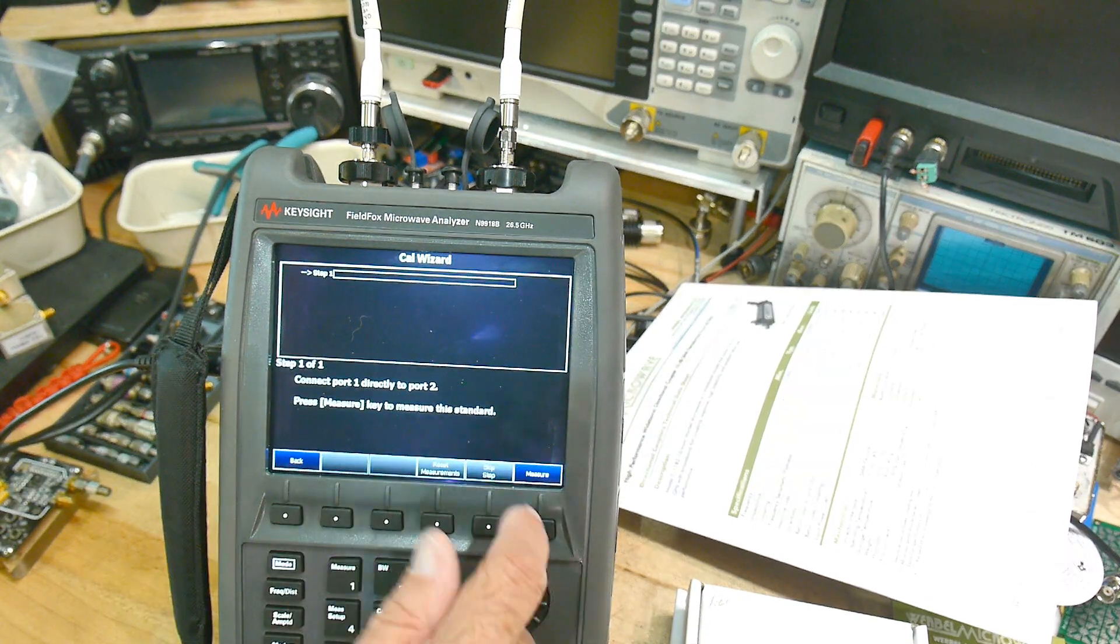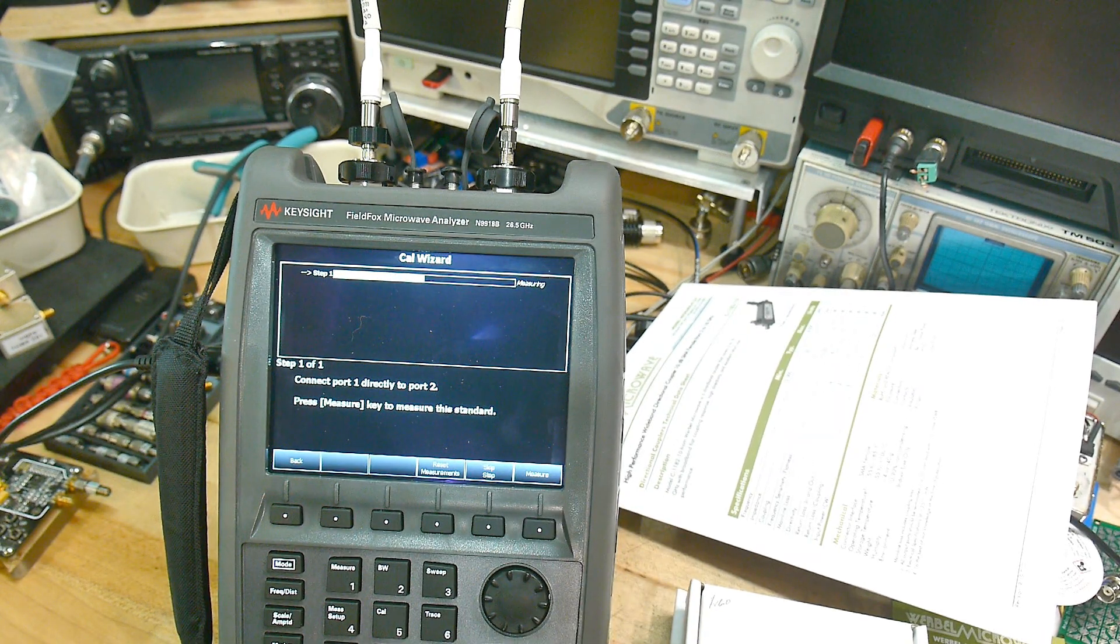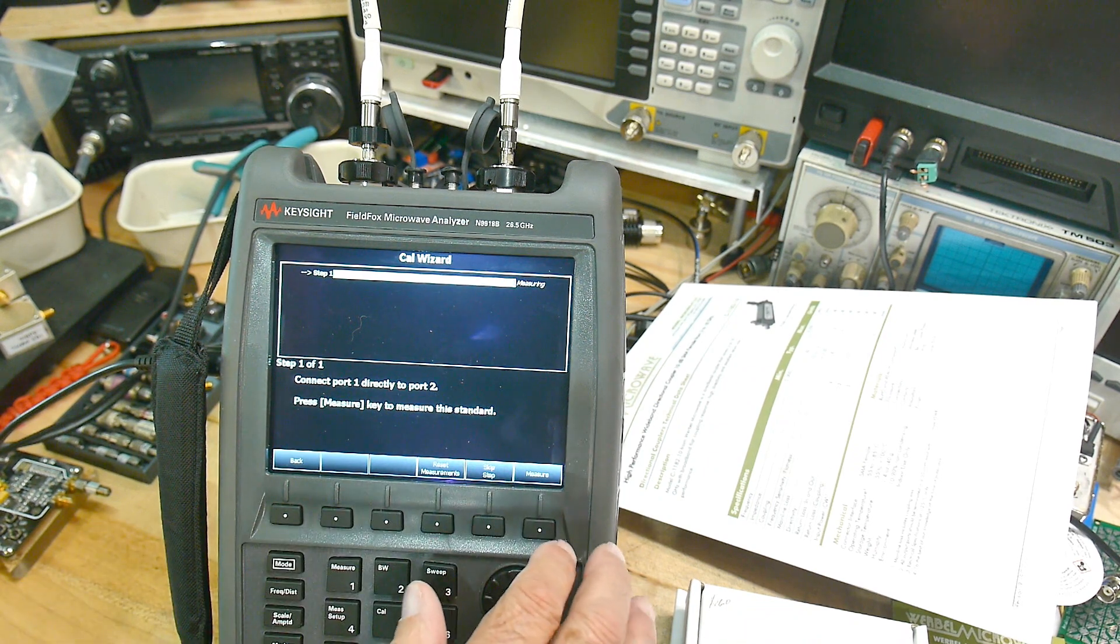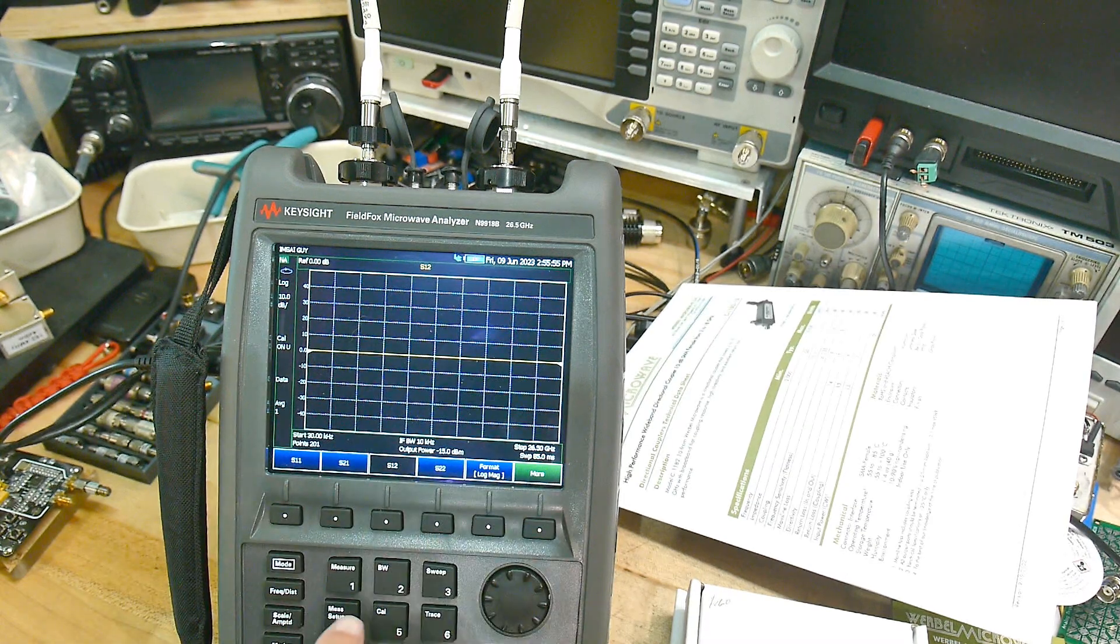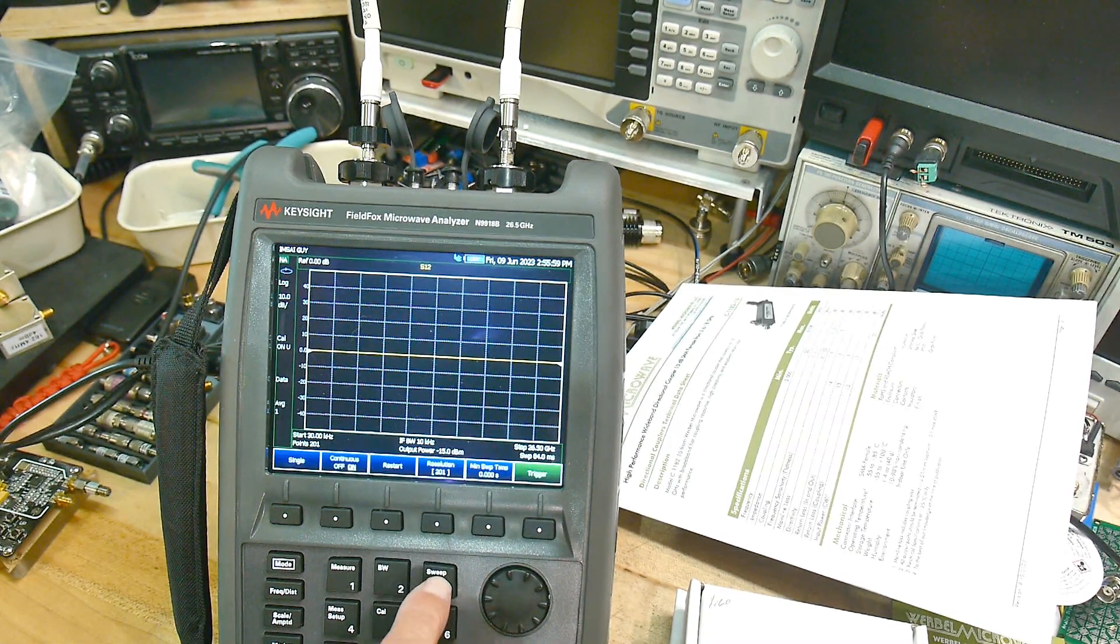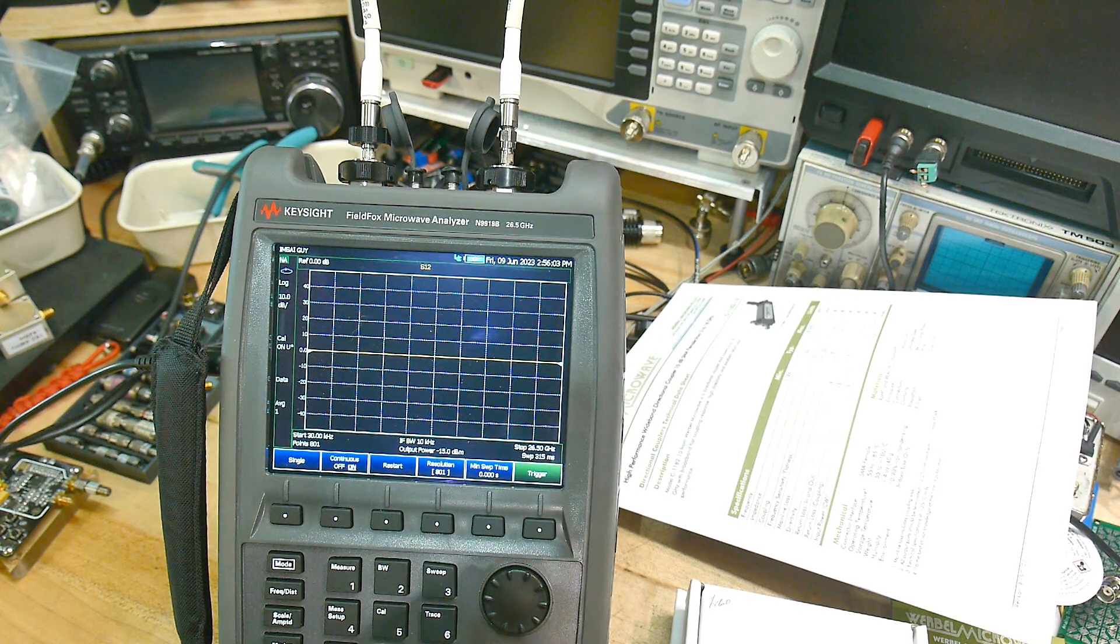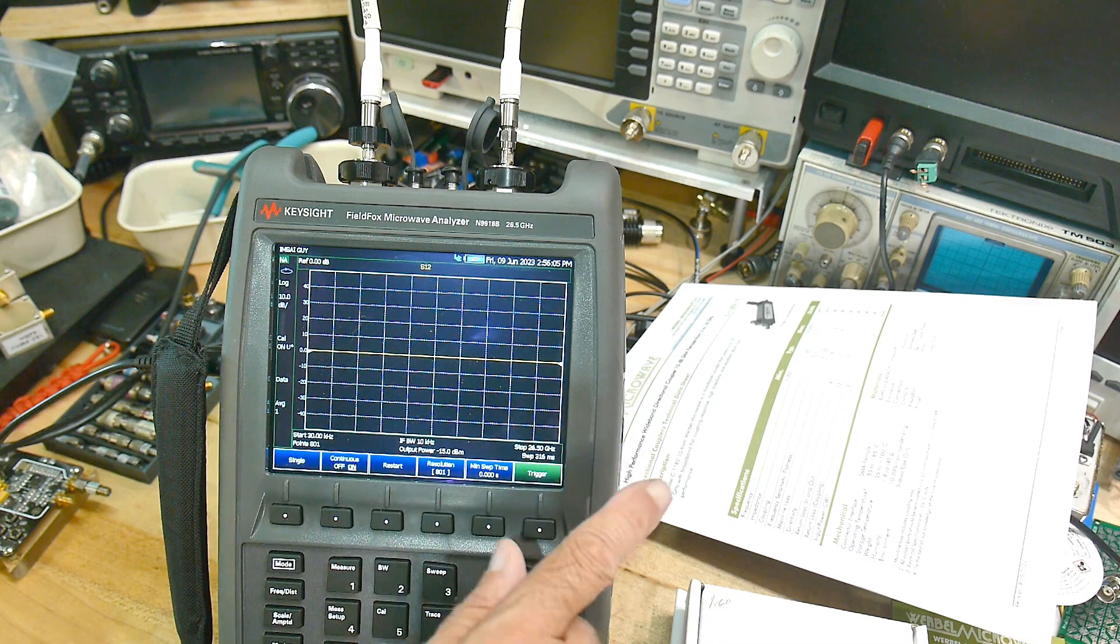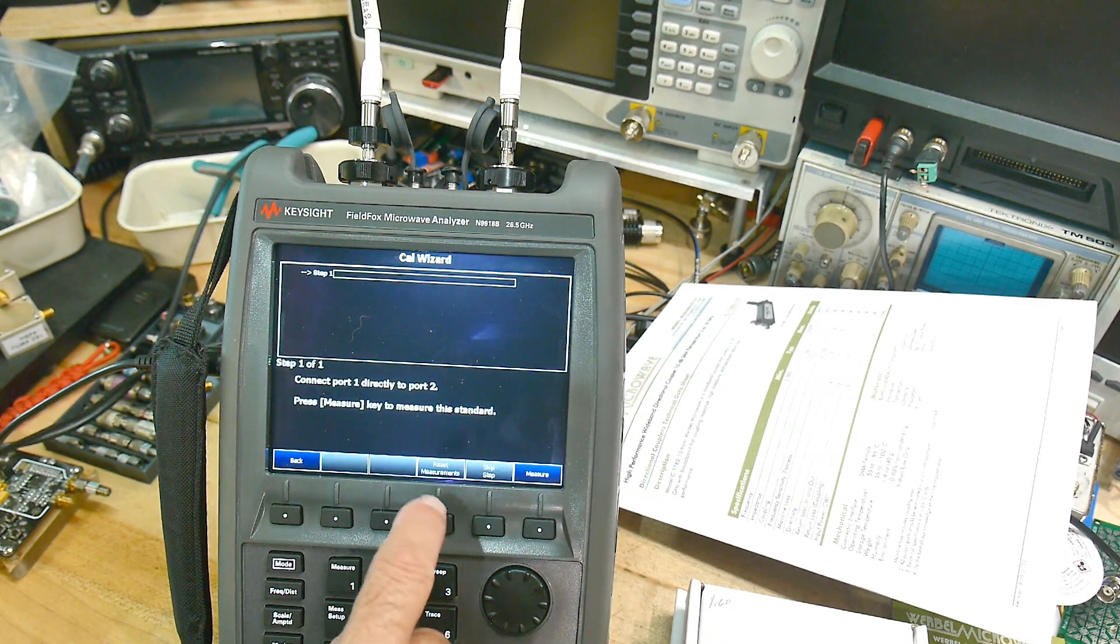Let me set the number of steps. We have a lot of steps here. Let me go back and make sure the steps are good. Let's see, measure setup. Where is it? Trace, yeah, sweep. Resolution 201, yeah, let's do 801. 801 steps across. Let's go back and recal it for that.